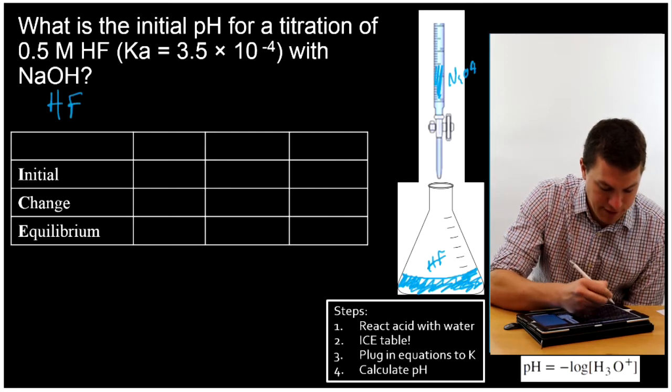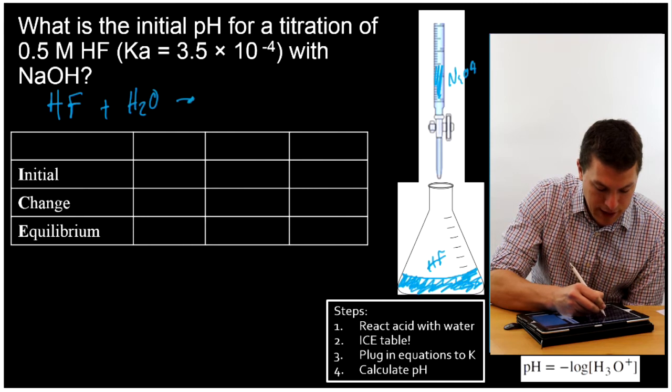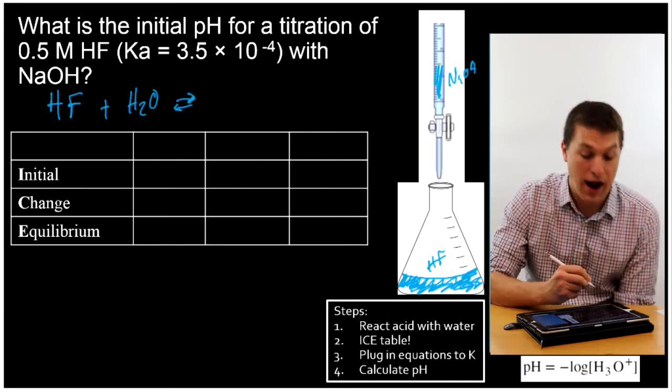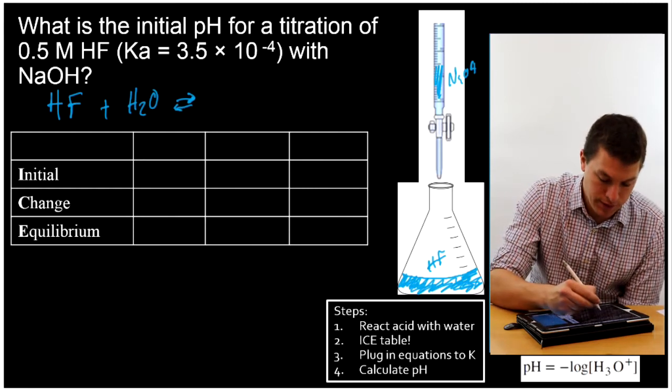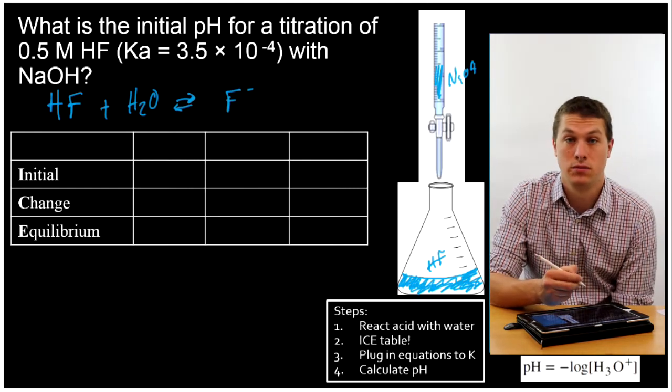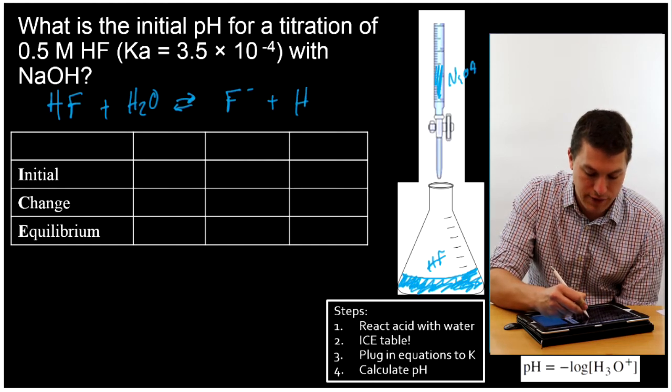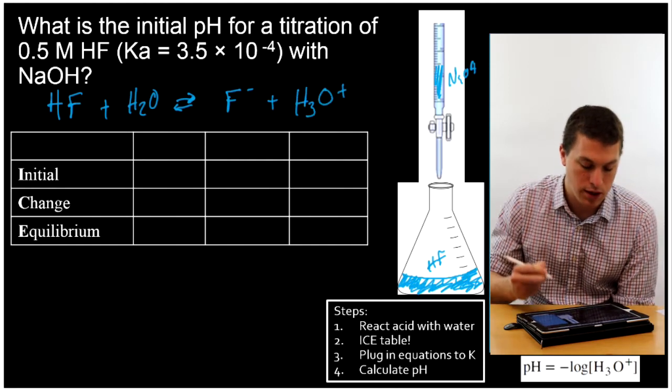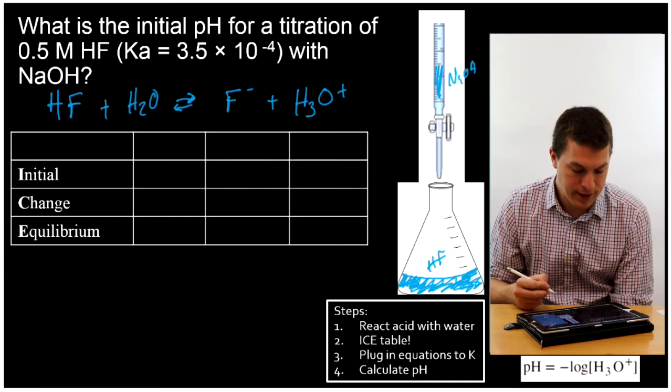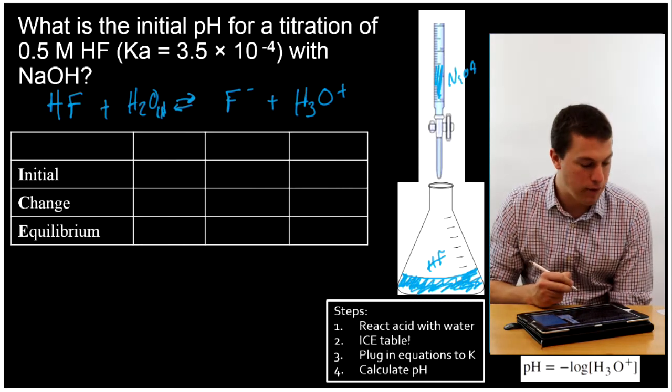So we know that our acid is HF, and we're going to react that with water. Remember that our acid is going to give up a proton, and that's going to mean that our HF becomes F-, that's HF without its H. And our water is going to gain the proton. That's true whenever you react an acid with water, the acid gives up its proton.